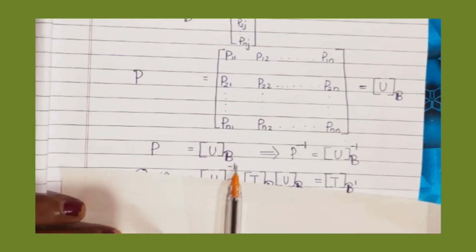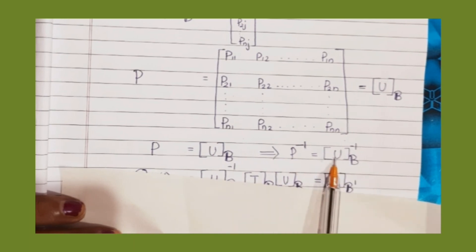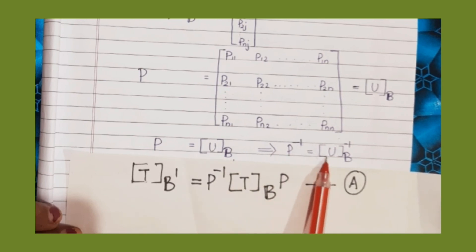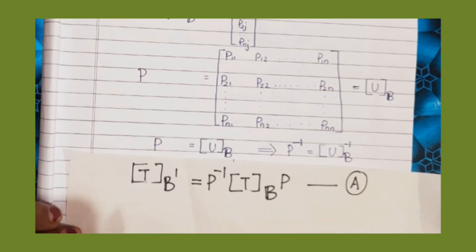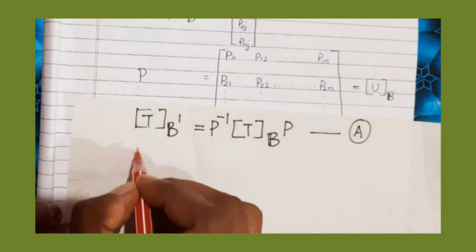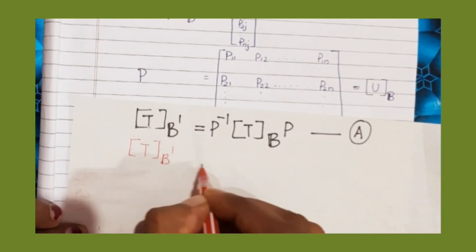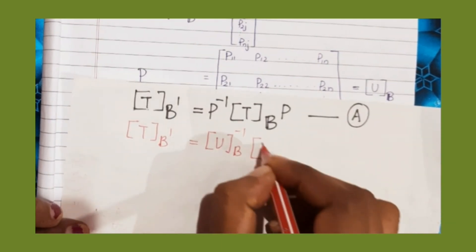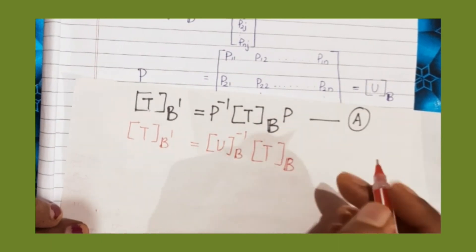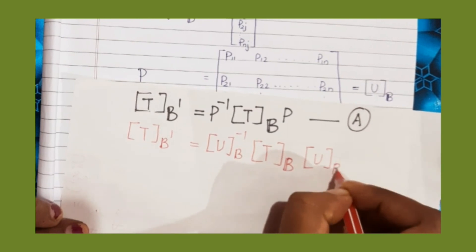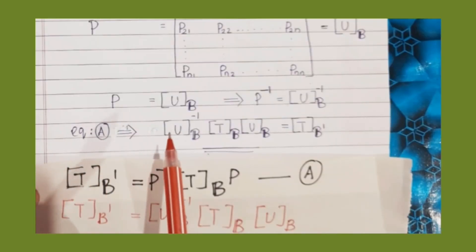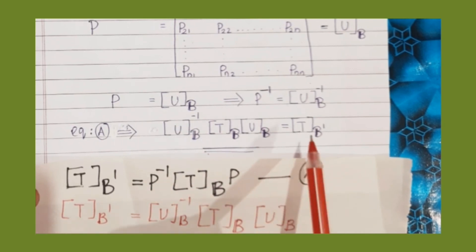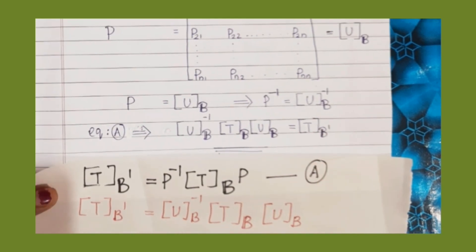Therefore P equals the matrix of U related to B, which implies P inverse equals the matrix of U inverse related to B. Now substituting into equation A, the matrix of T related to B' is equal to P inverse times the matrix of T related to B times P, which gives us the matrix of U inverse related to B, times the matrix of T related to B, times the matrix of U related to B, equal to the matrix of T related to B'. Hence the proof is complete.